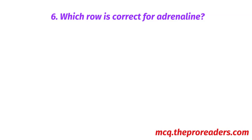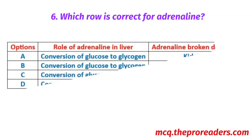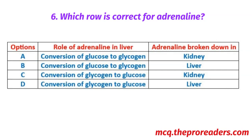Which row is correct for adrenaline? Options show role of adrenaline in liver and where adrenaline is broken down. A: Conversion of glucose to glycogen, kidney. B: Conversion of glucose to glycogen, liver. C: Conversion of glycogen to glucose, kidney. D: Conversion of glycogen to glucose, liver. Option C — conversion of glycogen to glucose, liver — is the correct answer.